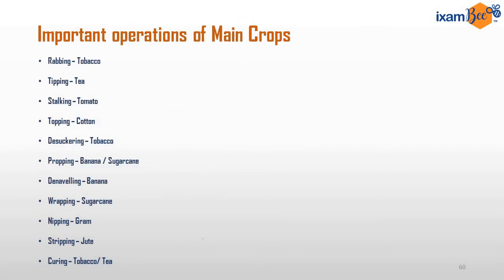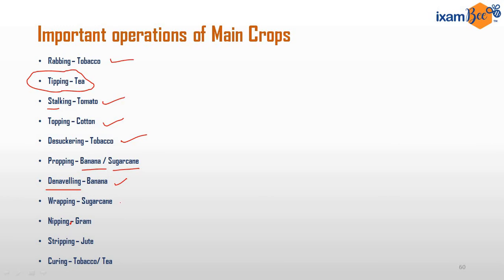Important crop operations: wrapping is done in tobacco and sugarcane, stocking is done in tomato, topping is for cotton, de-suckering is for tobacco, propping is in banana and sugarcane (providing support), de-navelling is cutting the female flower of banana, nipping is done in gram, and curing is an operation for both tobacco and tea.